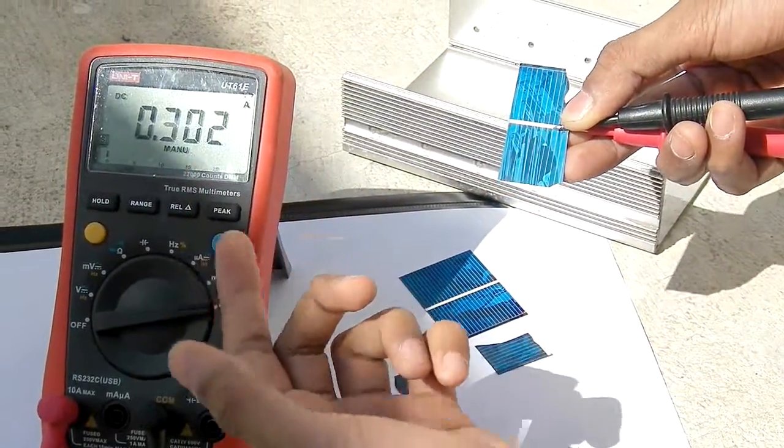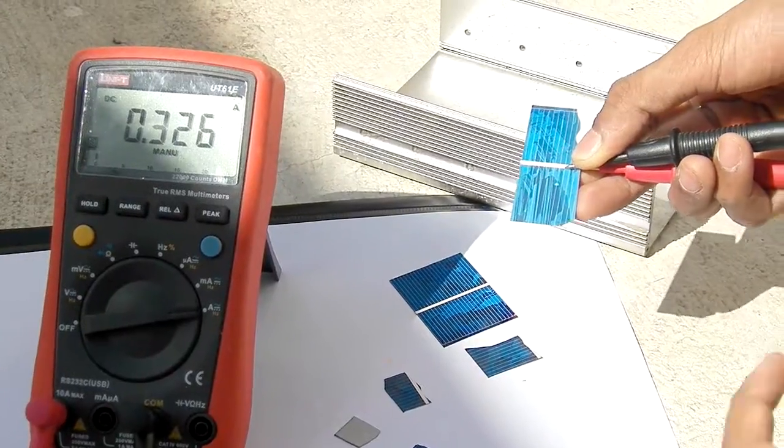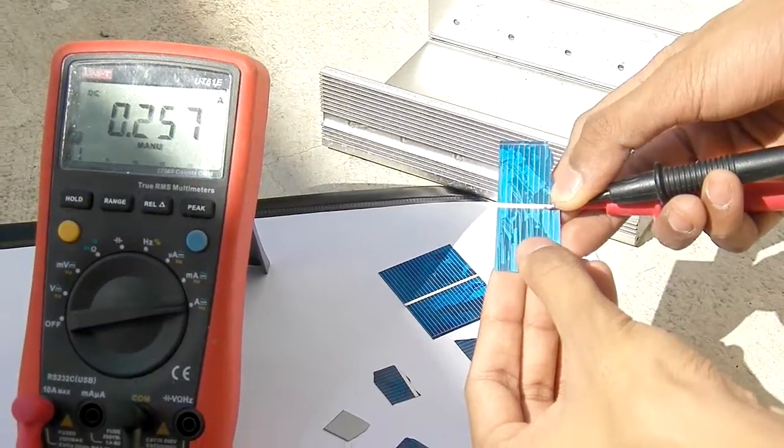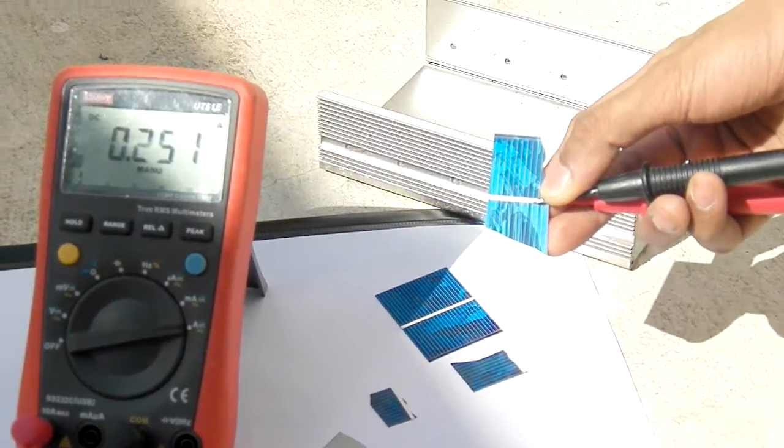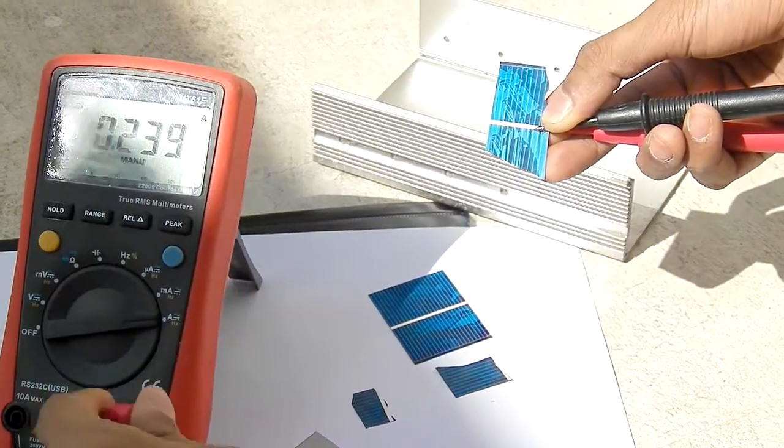Now I'll be breaking this solar cell, and as you can see the current just dropped. But if you measure the voltage of this cell...